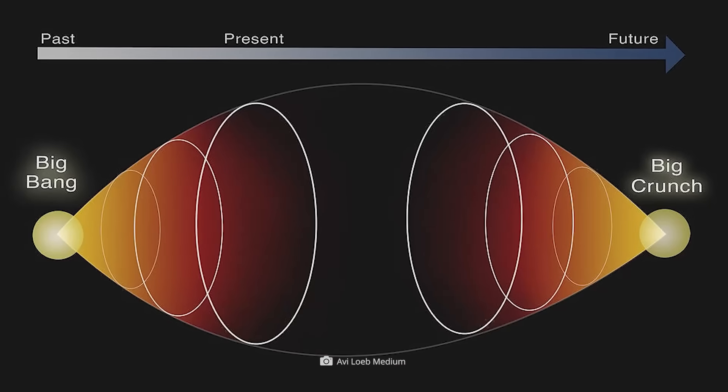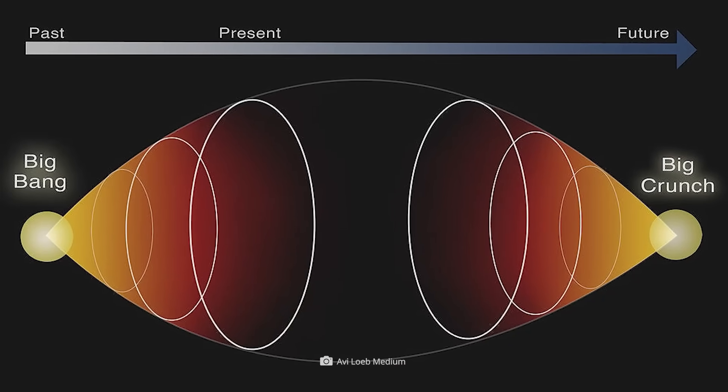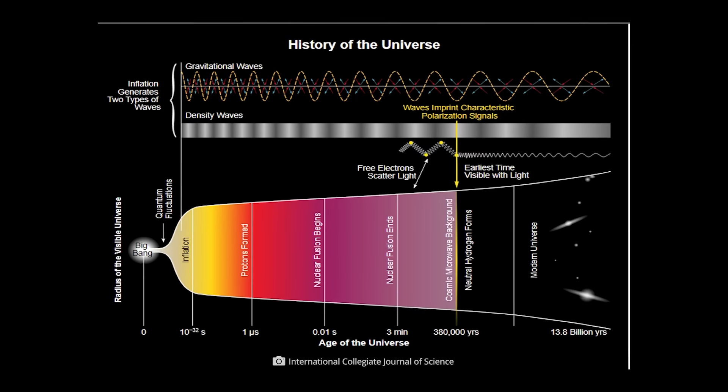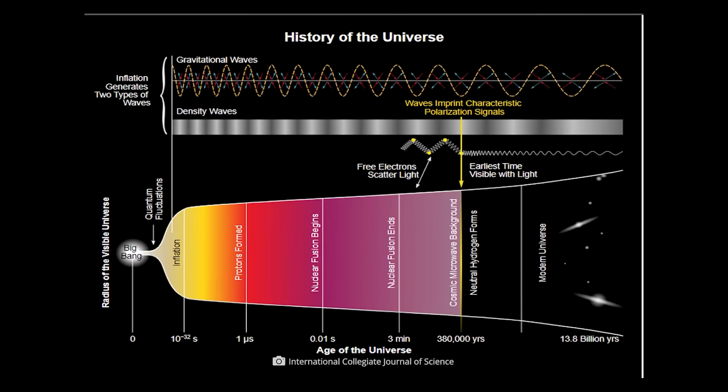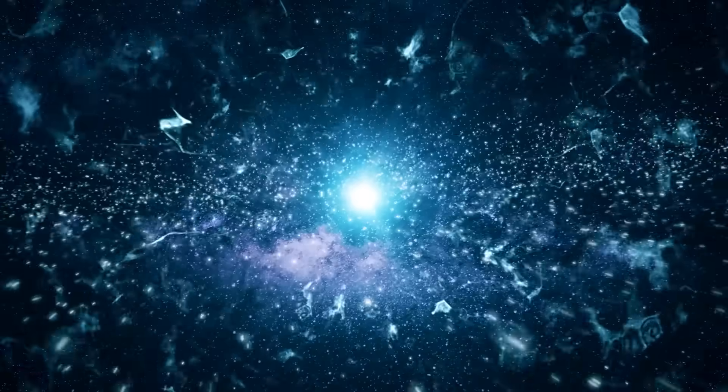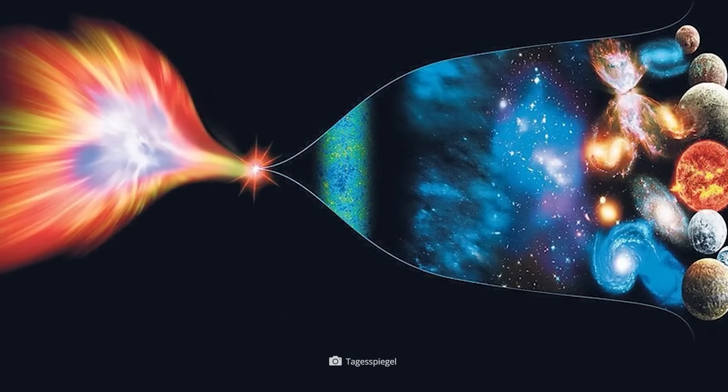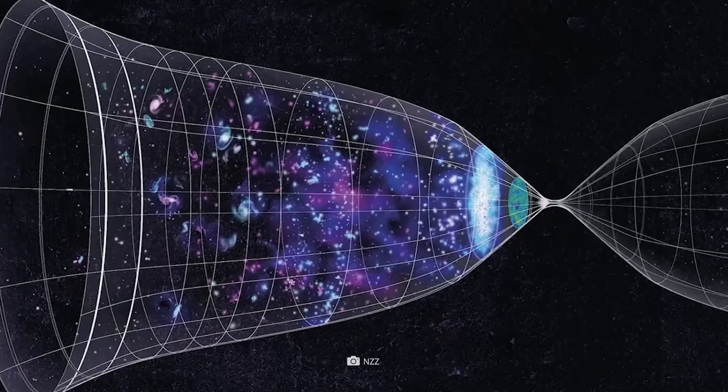And a theory that deals with the finale of the universe goes by the name of the Big Crunch. It states that one day, under the influence of gravitational force, the cosmos will collapse and experience a kind of reverse Big Bang. Where this exciting hypothesis is taken a step further, the Big Bang ultimately becomes a big bounce.